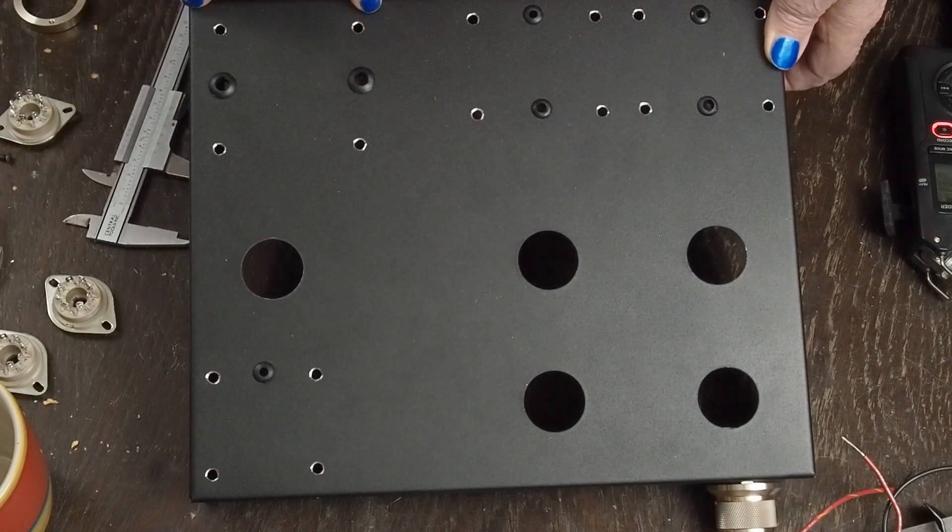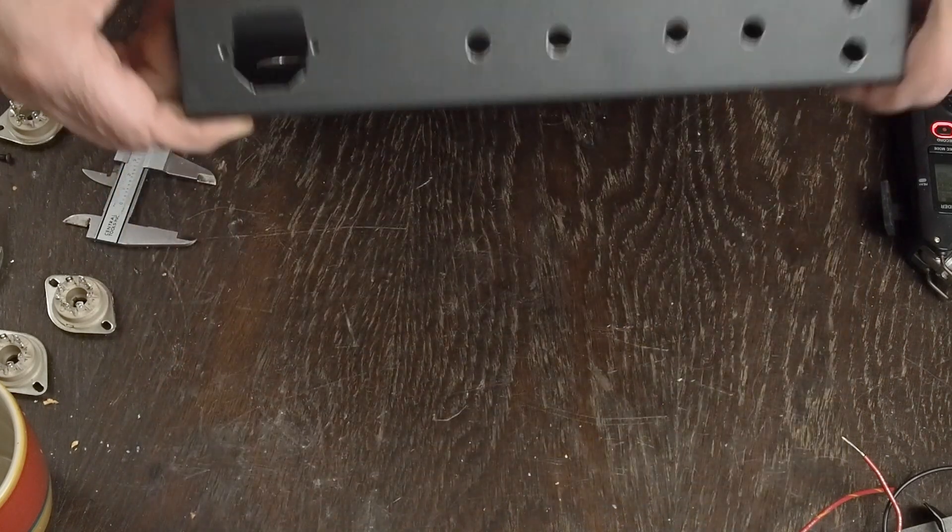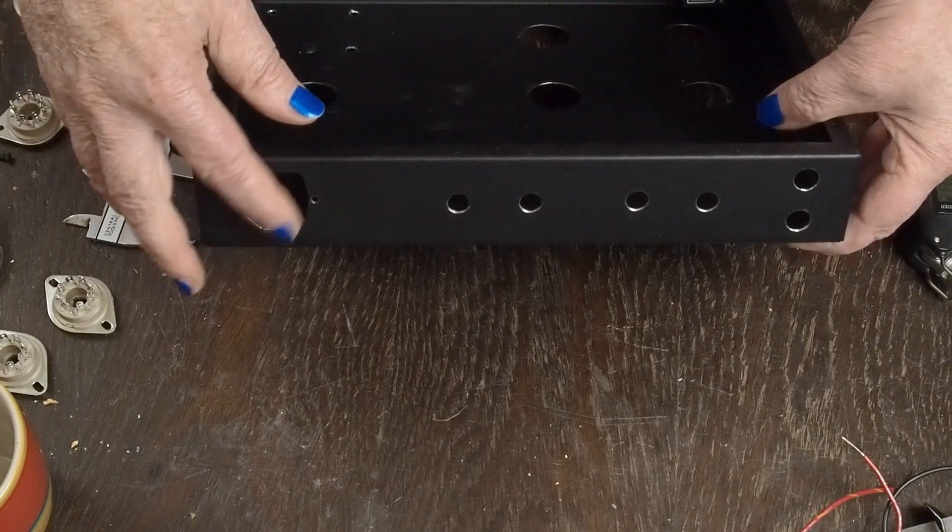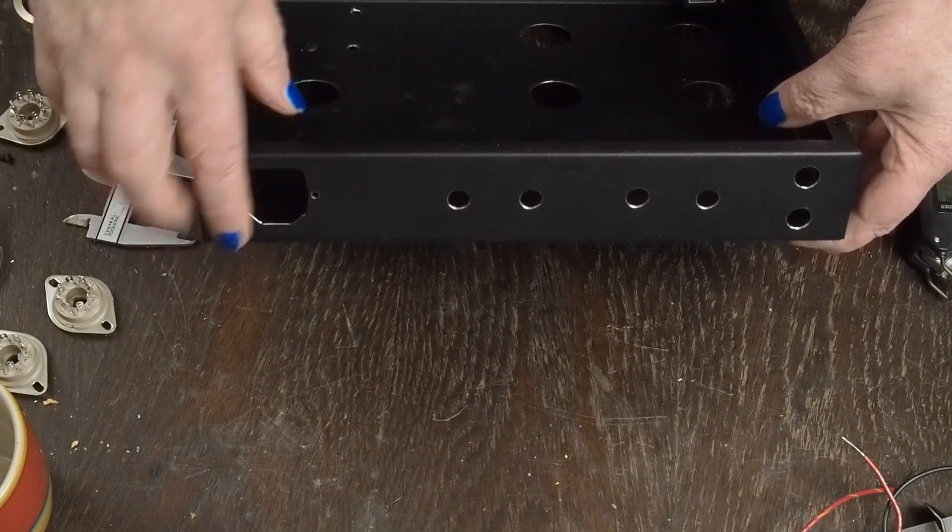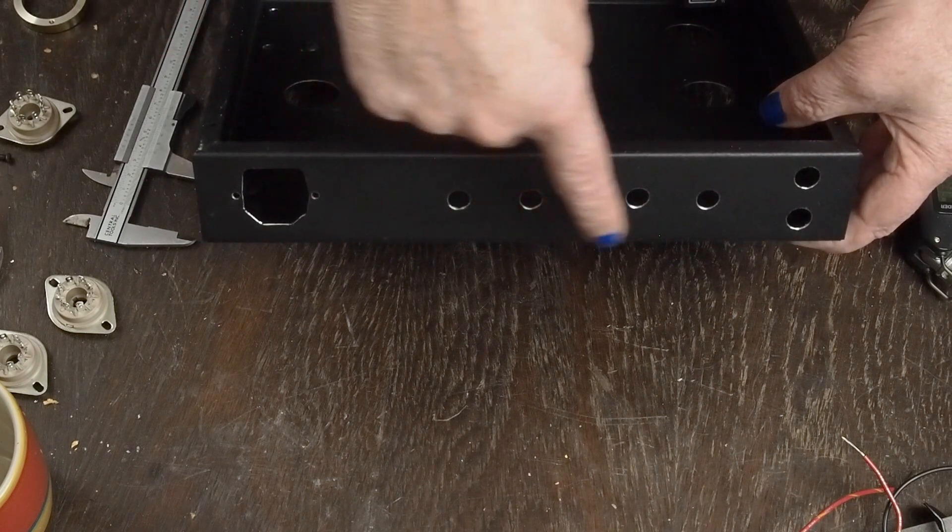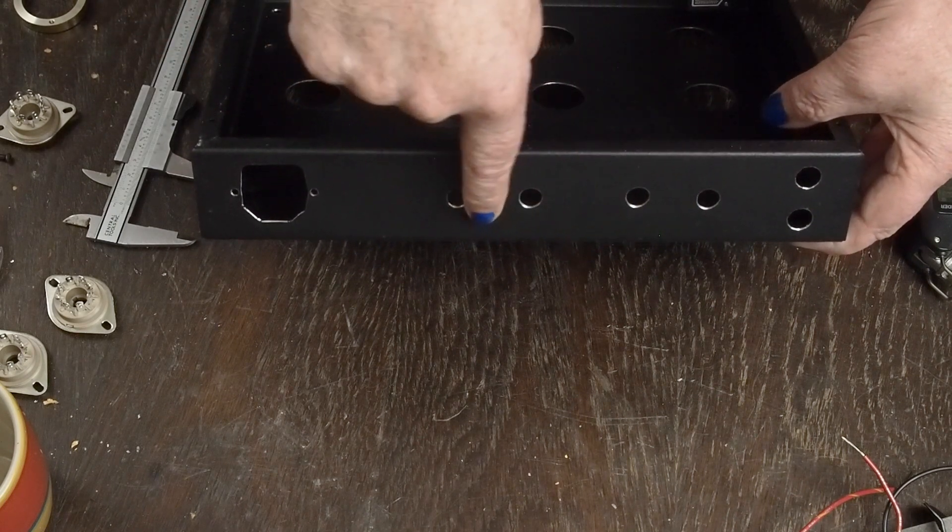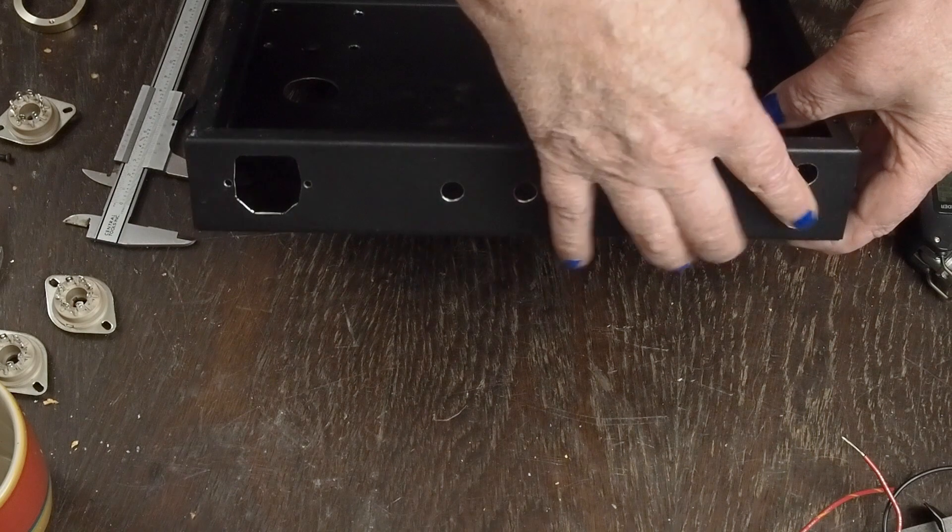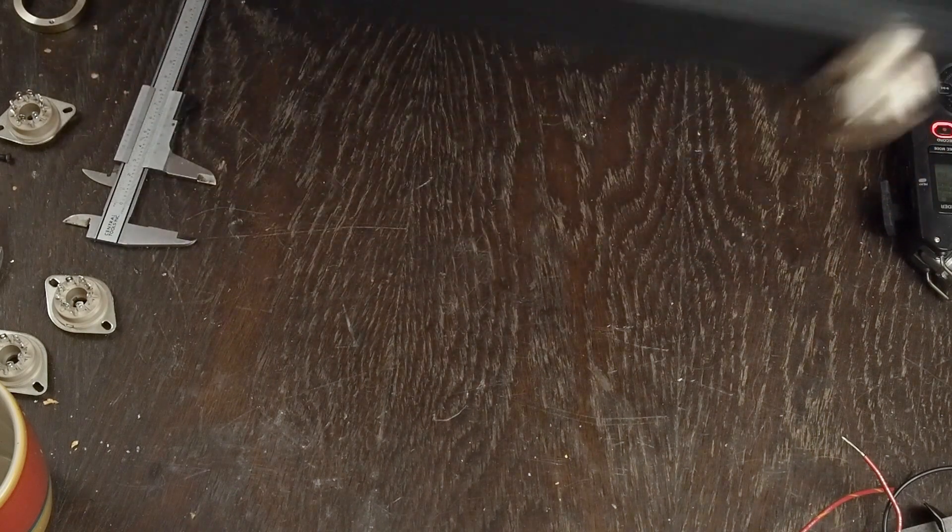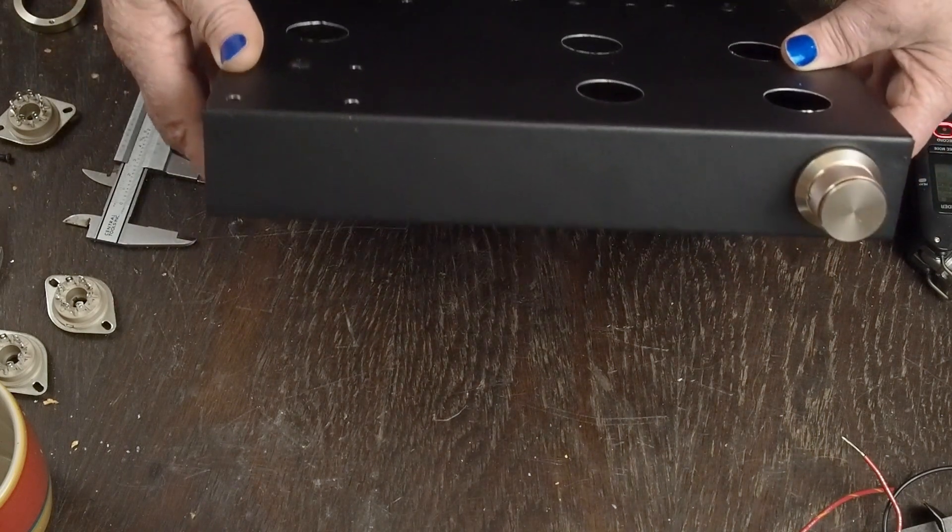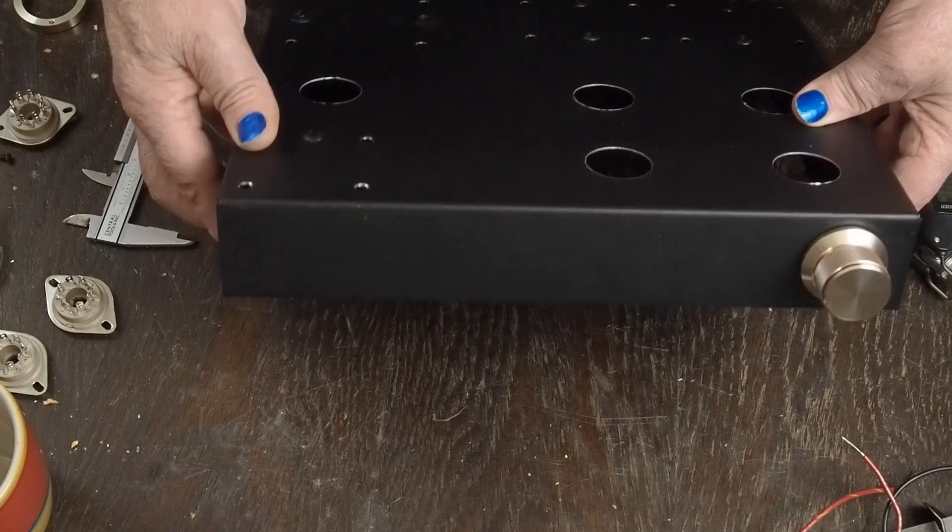We have all the power supply over on this side. In the back we have the IEC power socket. The speaker output jacks are going to be across here, two RCA jacks are there, and then in the front is the volume knob.